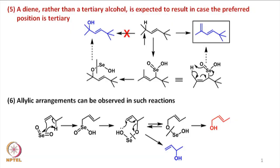According to the fifth rule, a diene rather than a tertiary alcohol results in cases where the preferred position is tertiary. For example, if we take a compound of this type where the allylic hydrogen is tertiary — because on the right hand side we have three methyl groups and there is no allylic hydrogen — what one would expect is that this undergoes oxidation to form a tertiary allylic alcohol.